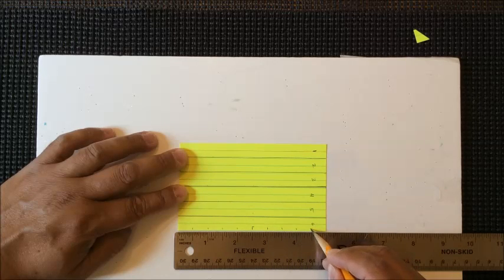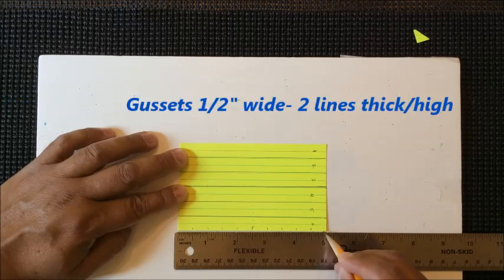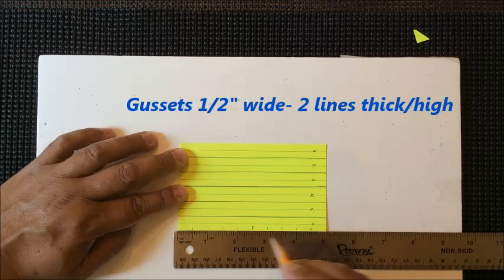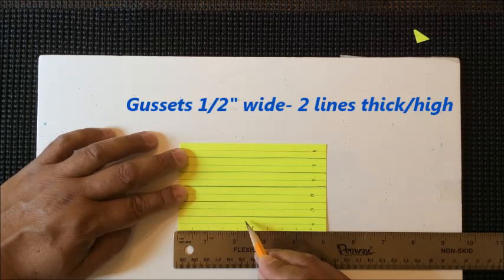So our gussets will then be a half an inch wide, two lines thick. A half an inch wide, two lines thick.